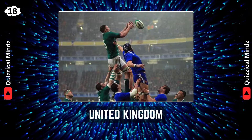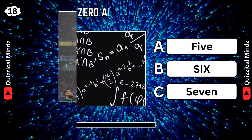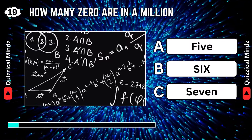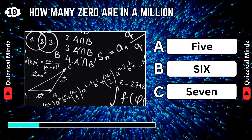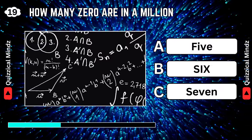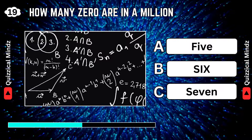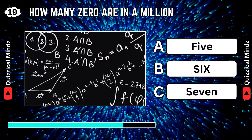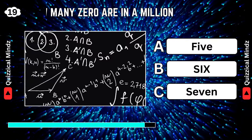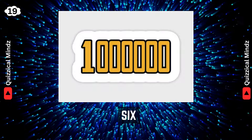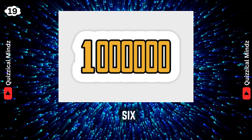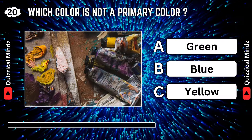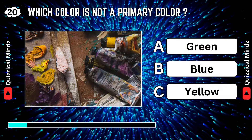United Kingdom. How many zeros are in a million? Six. Which color is not a primary color?